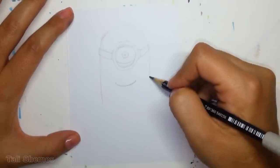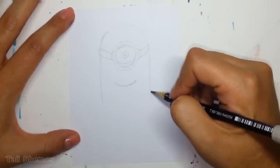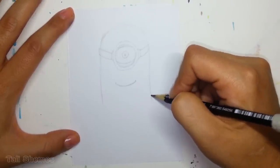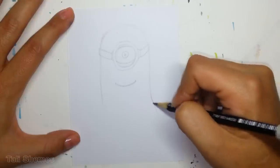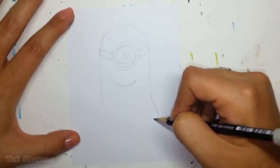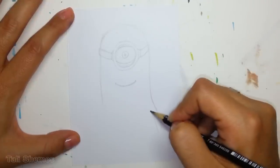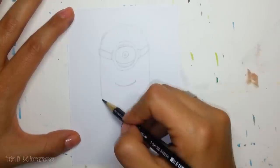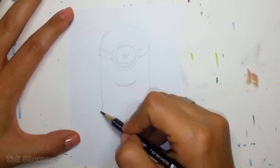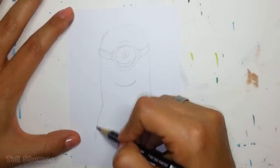Now I'm starting to draw his arms. I'm going to leave his hands for later because I want to see how the body looks, and then I'll know if I need to extend the arms or make them shorter. So I'll go back to the hands later.